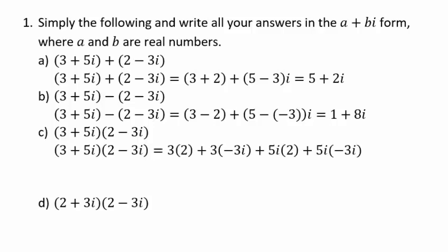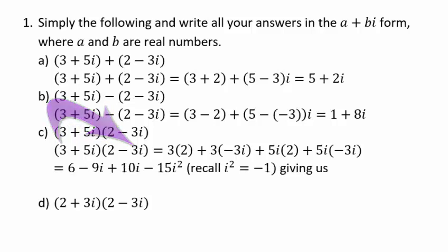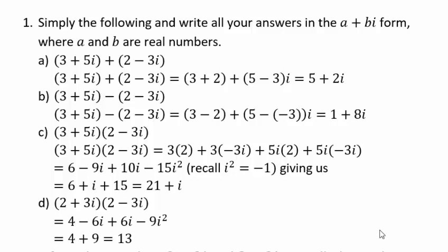For multiplication, use the distributive property: (3 + 5i)(2 - 3i). We get 3×2 = 6, 3×(-3i) = -9i, 5i×2 = +10i, and 5i×(-3i) = -15i². Remember i² = -1, so -15i² = +15. Combining: 6 + 15 = 21, and -9i + 10i = i, giving 21 + i.